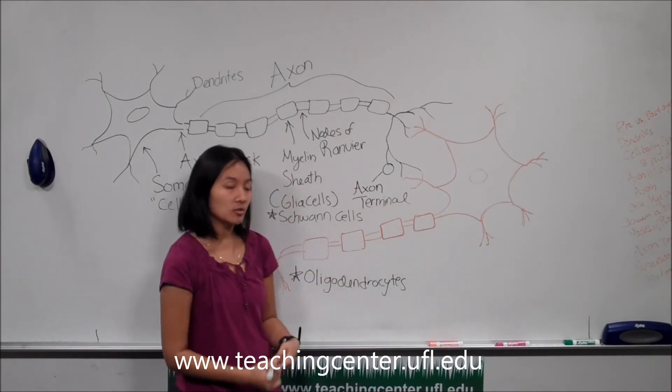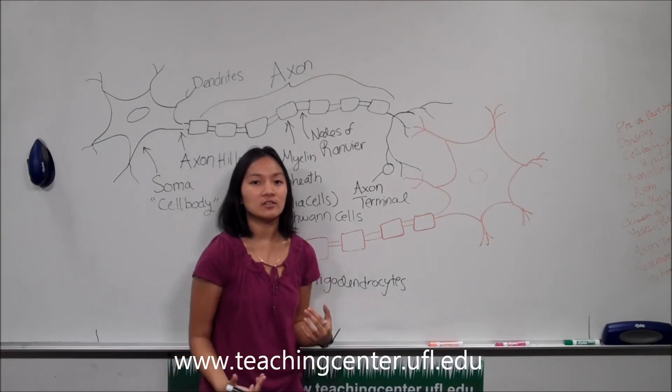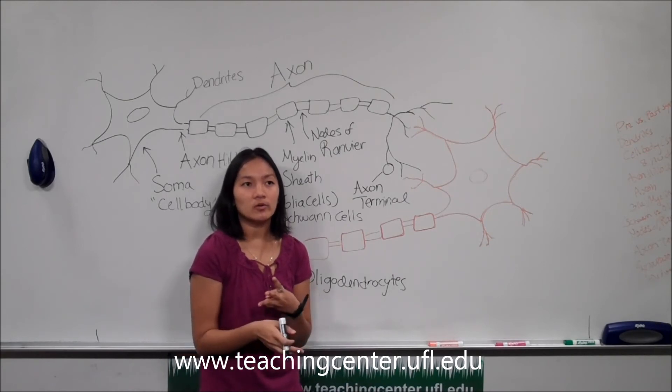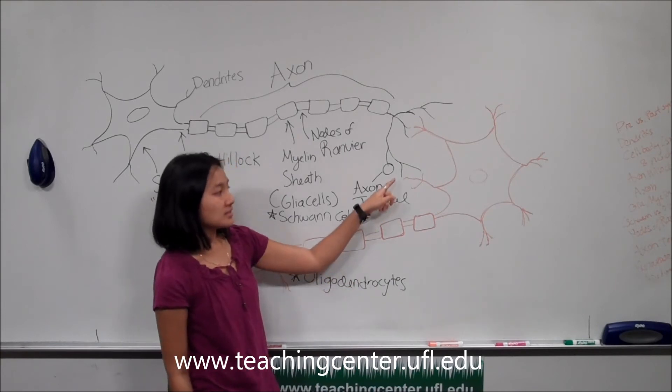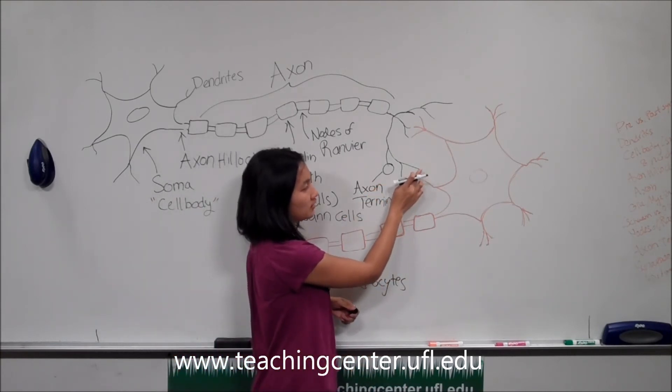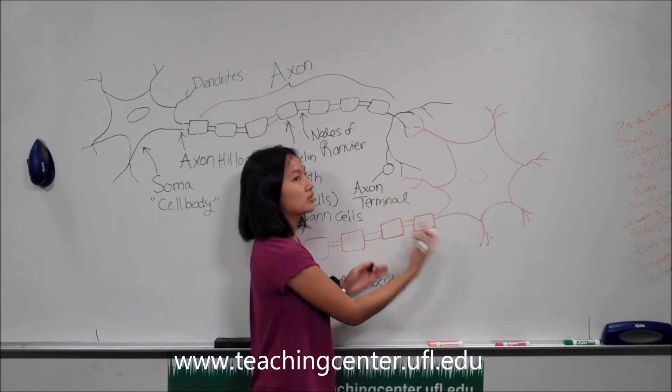So it's at the axon terminal that you'll be releasing a lot of neurotransmitters such as acetylcholine, serotonin, or dopamine and other chemical messengers like that. And these chemical messengers have to travel a small gap between this axon terminal and the dendrites of another cell.